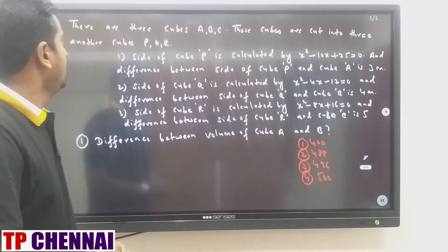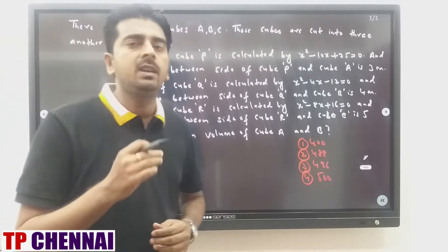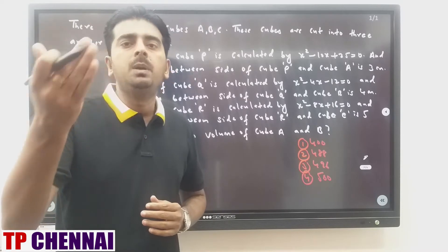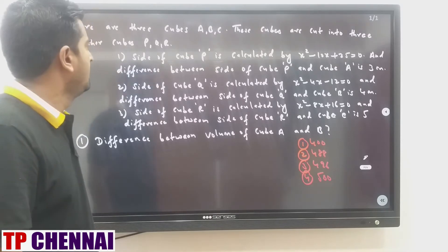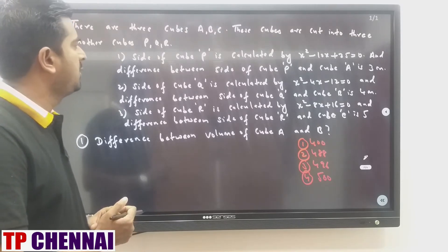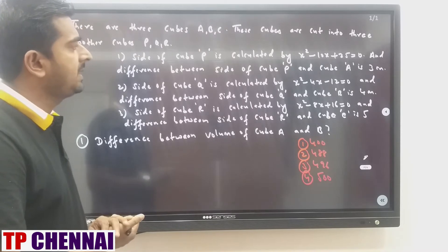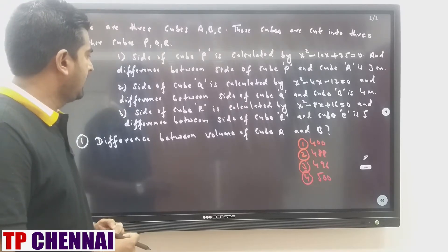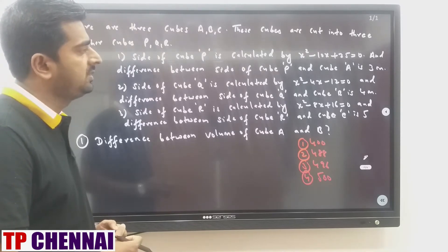First let me read what they have given. There are three cubes ABC. These cubes are cut into three cubes PQR. So ABC side will be more, PQR side will be less. Three conditions are given. First, side of cube P is calculated by X² minus 10X plus 25 = 0, and difference between side of cube P and cube A is 3 meters. Second, side of cube Q is calculated by X² minus 4X minus 12 = 0, and difference between side of Q and cube B is 4 meters. Third, side of cube R is calculated by X² minus 8X plus 16 = 0, and difference between side of cube R and cube C is 5 meters.